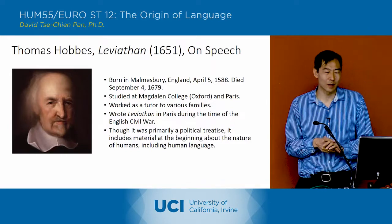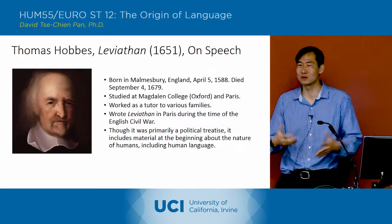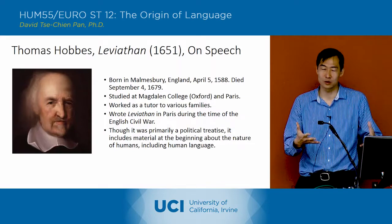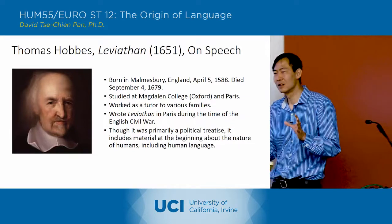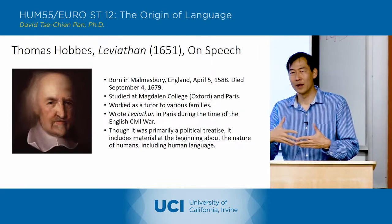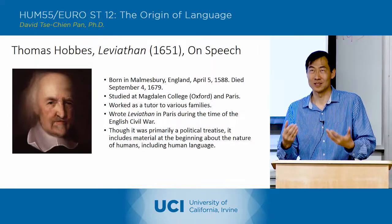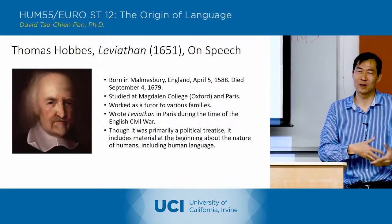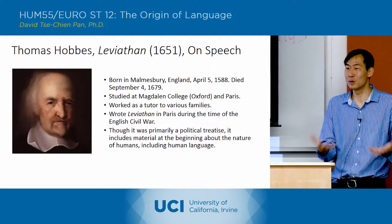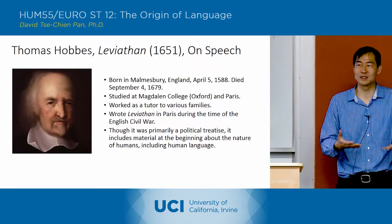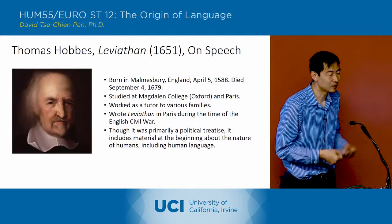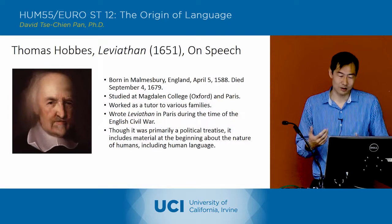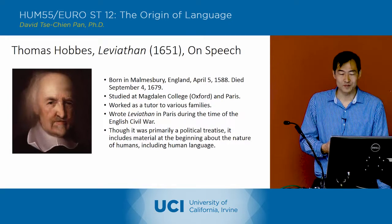He wrote the Leviathan in Paris during the time of the English Civil War and was very much involved in politics. Though it was primarily a political treatise, he starts out with stepping stones toward what he thinks is an adequate politics. Part of that is investigating the nature of humanity, and he begins that discussion with the nature of language — basically in the second chapter of Leviathan, where he talks about language.